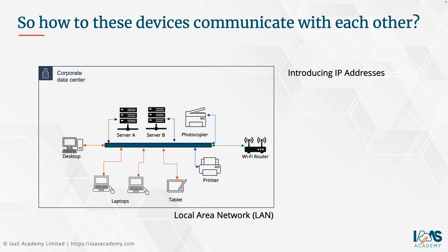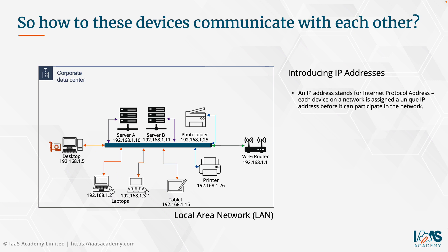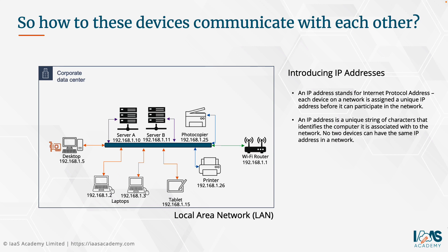On the screen we have a corporate data center with an internal network — what we call a local area network, or LAN for short. Each device in that network will have installed within it a network interface card, which is designed to allow communication to actually take place. Every device on that network will have one or more network interface cards, and these devices can be assigned one or more IP addresses. Every device will also have a unique IP address — an internet protocol address — and no two devices can have the same IP address in a given network.